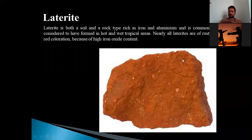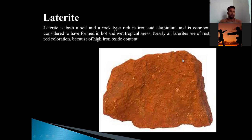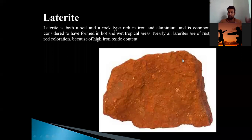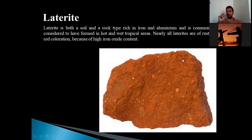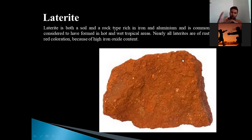The first example is laterite. We have all seen such rock — in Hindi or Marathi we usually call it Murum — those red-colored rocks. The red color shows the presence of iron oxide; the oxidation of iron gives the red color. Laterite is both a soil and a rock type. When compacted and cemented into a hard, tough rock, it is a rock; otherwise it may be a soil. Laterite is rich in iron and aluminum — more in iron than aluminum — and is commonly considered to have formed in hot and wet tropical areas.